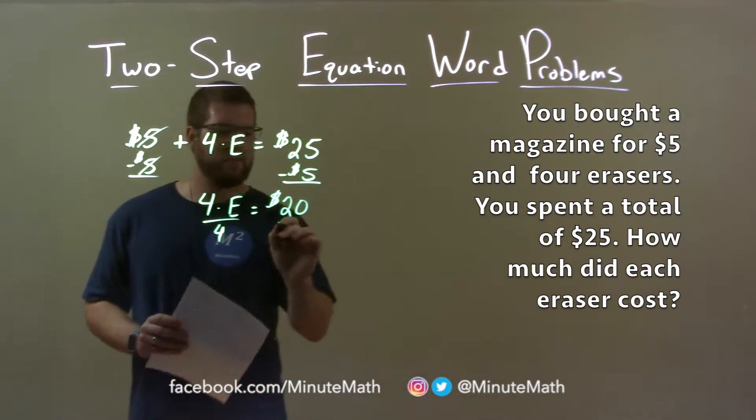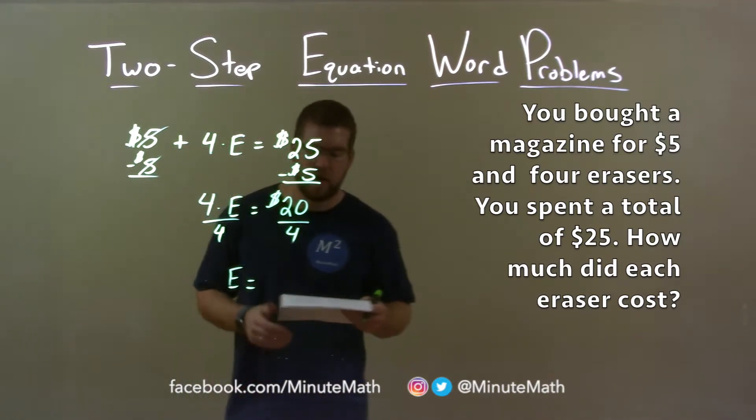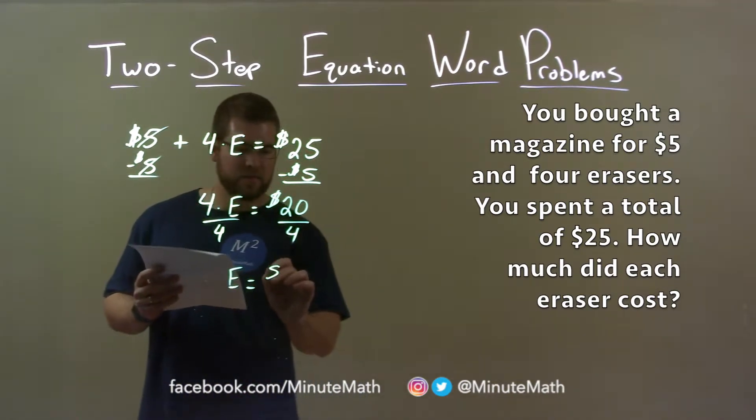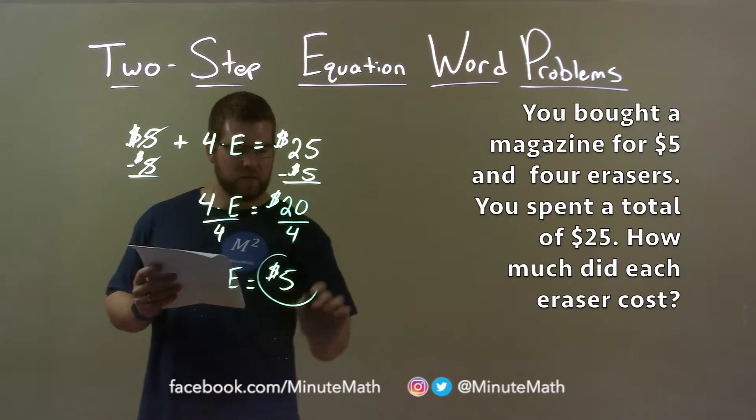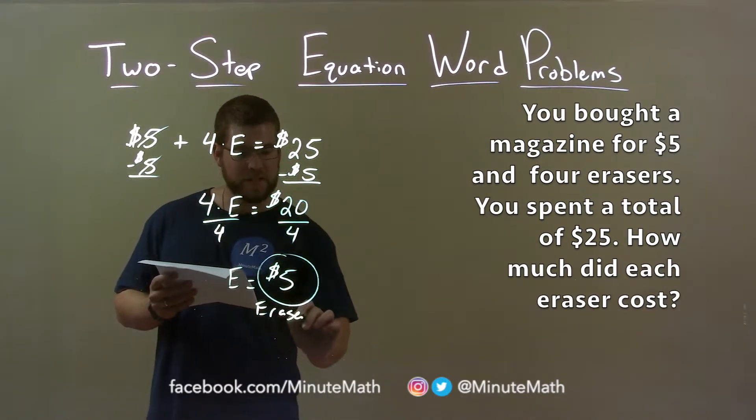Divide both sides by four, and I'm left with E by itself. $20 divided by four is $5, and $5 was the price of our eraser, or each eraser.